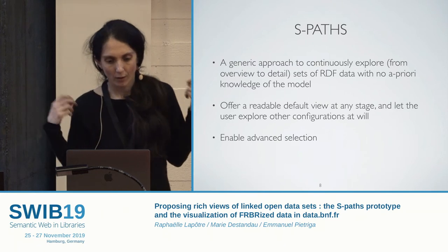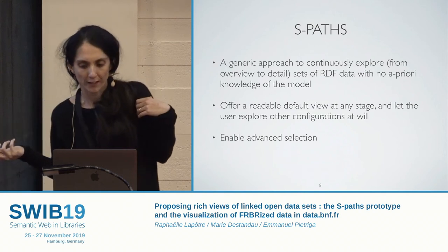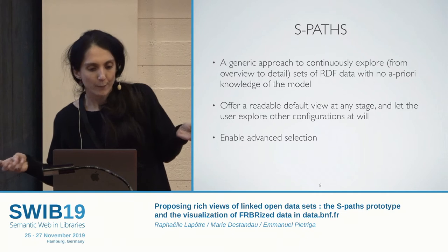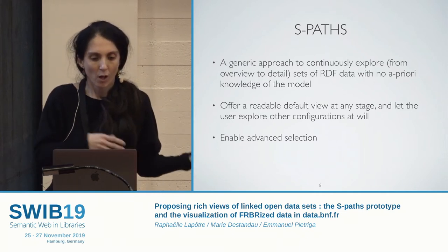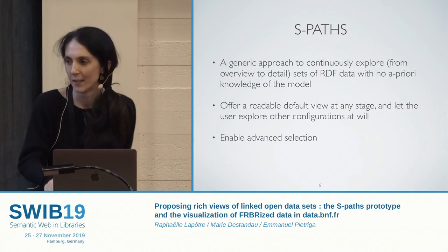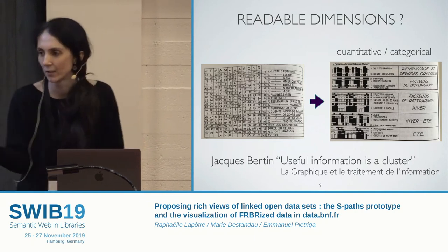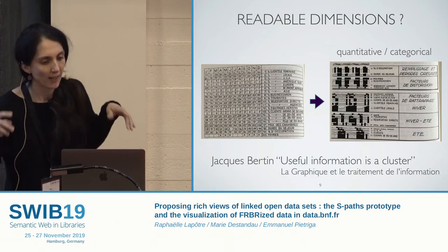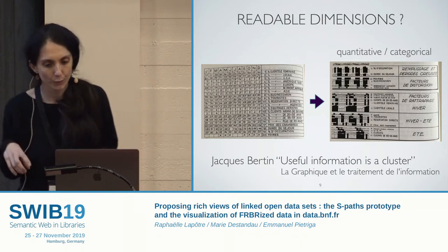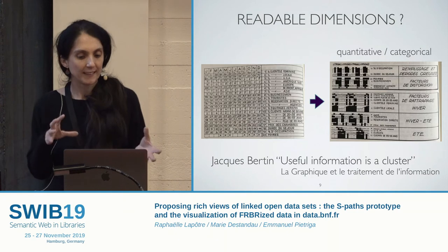The question was: what could the browser show to give an overview of a collection? If it's a large book collection, showing titles or authors wouldn't work. But showing the languages of the books or the centuries in which they were published could already give a first view of the collection and enable first access. We tried to think about how to make a tool automatically select such information, and we found ideas in Bertin, who explained in La Graphique how to group information to make it readable and usable.